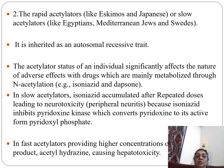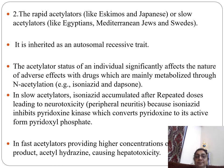Rapid acetylators include Eskimos and Japanese, while slow acetylators include Egyptians, Mediterranean Jews, and Swedish populations.